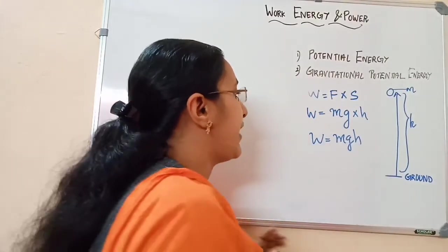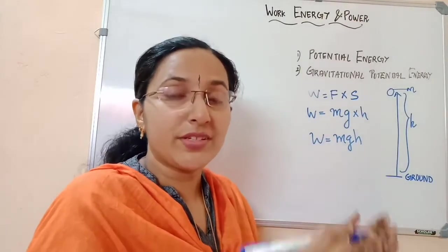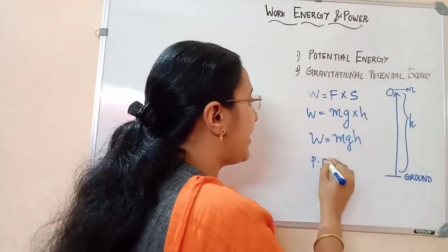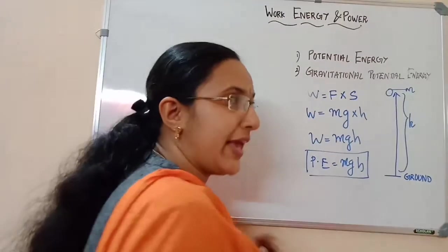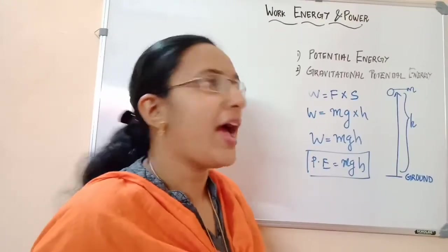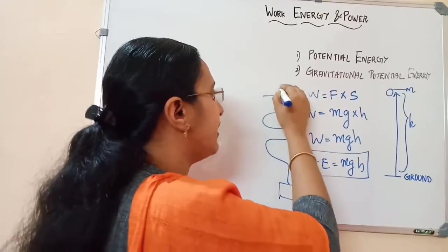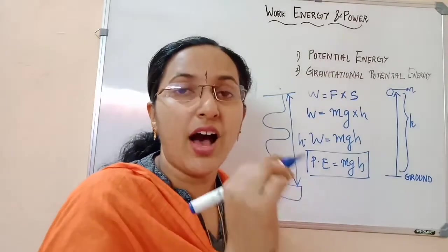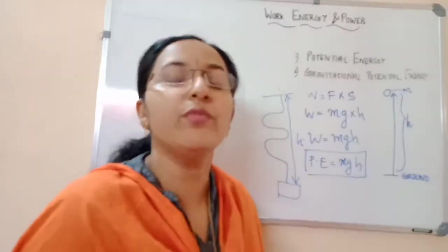The work done to raise an object from the ground to a particular height is the potential energy that object is gaining. When it reaches a particular height, it gains potential energy. Therefore, potential energy is equal to mgh. Here m is the mass of the object, g is the acceleration due to gravity, and h is the height. Whatever direction we are taking the object, we consider only the direct vertical height gained — we are not considering the total path, just how much height it has gained.